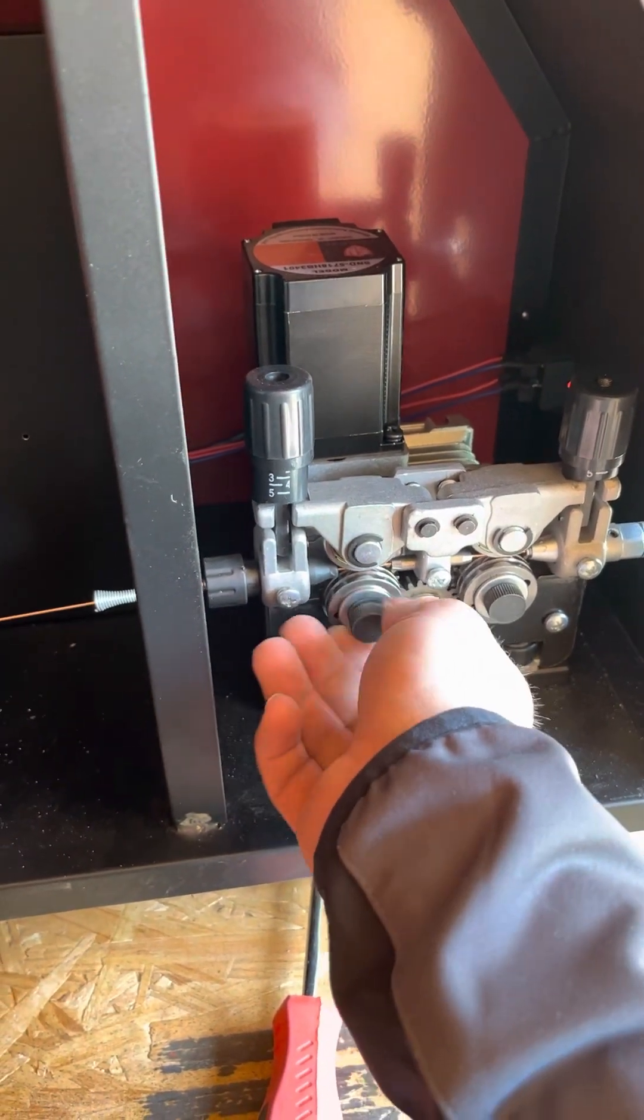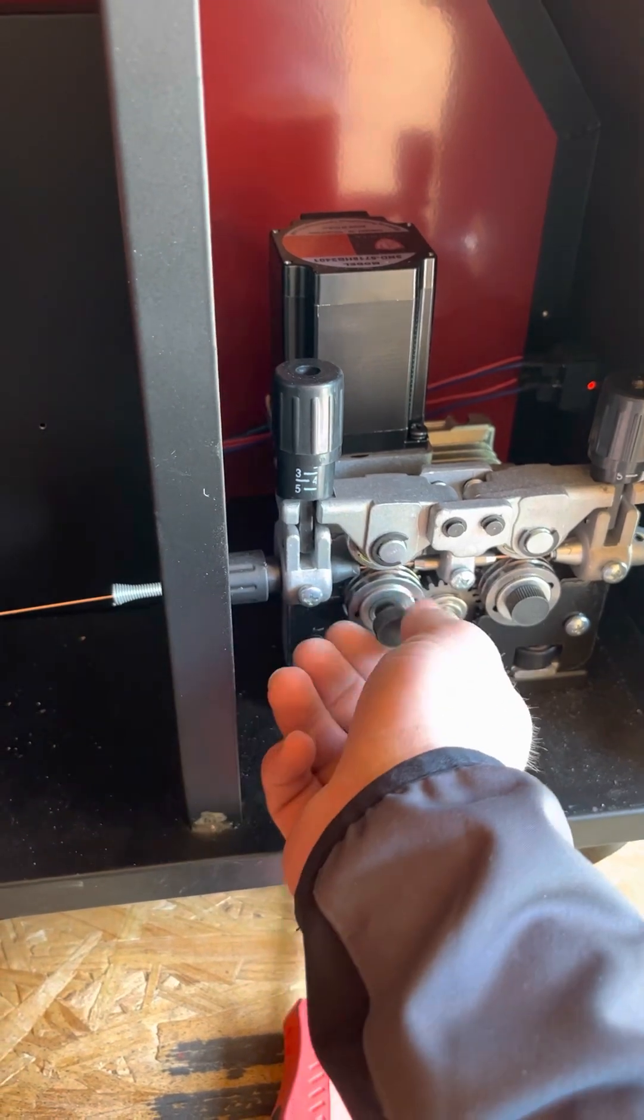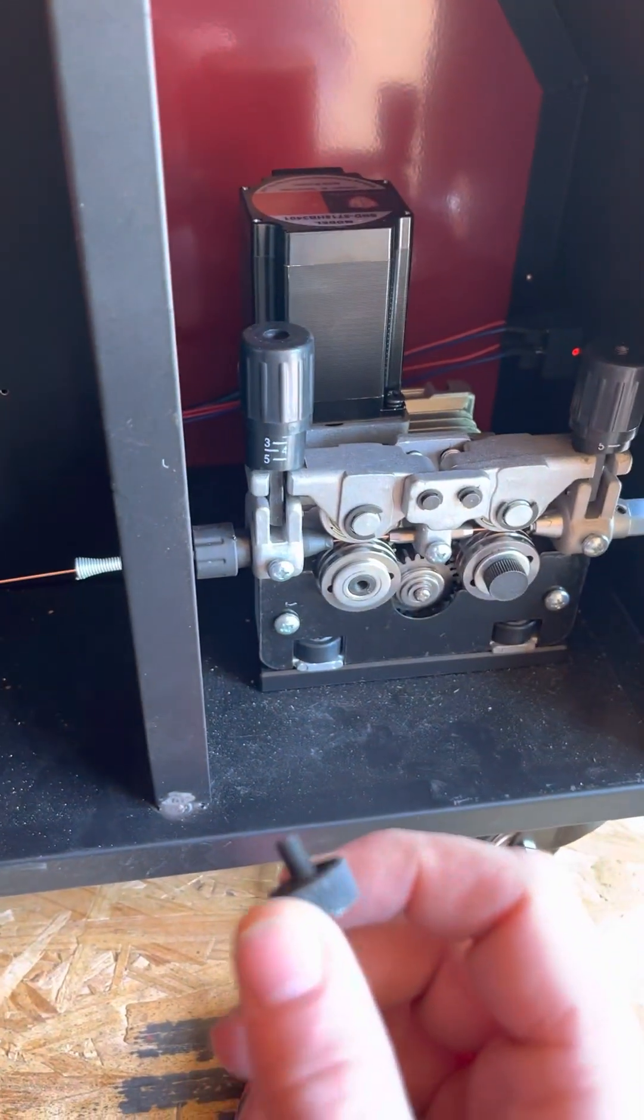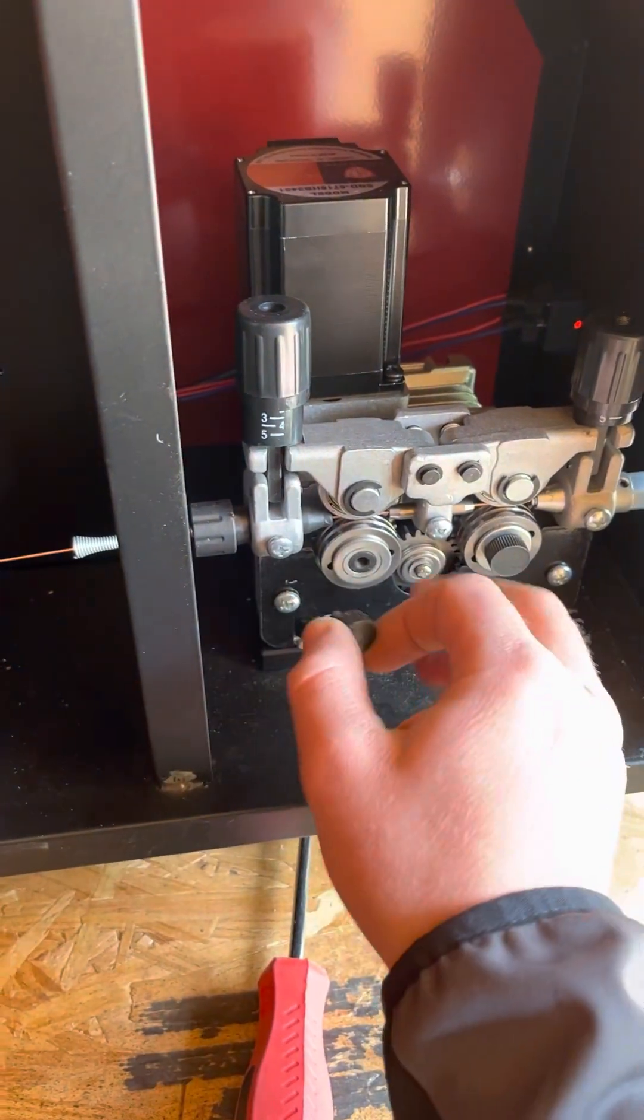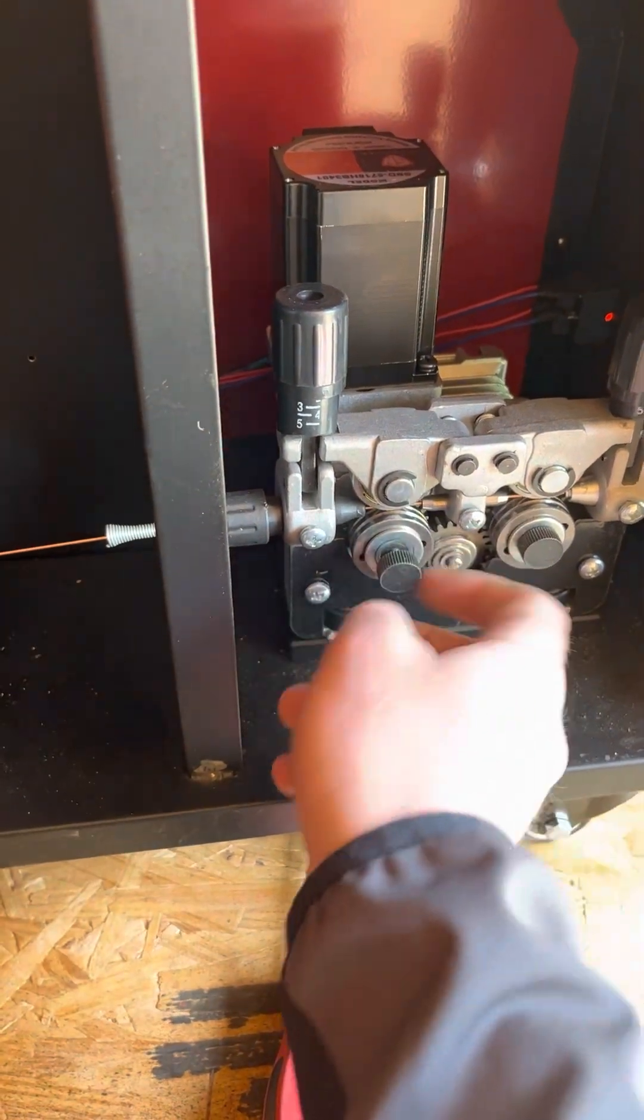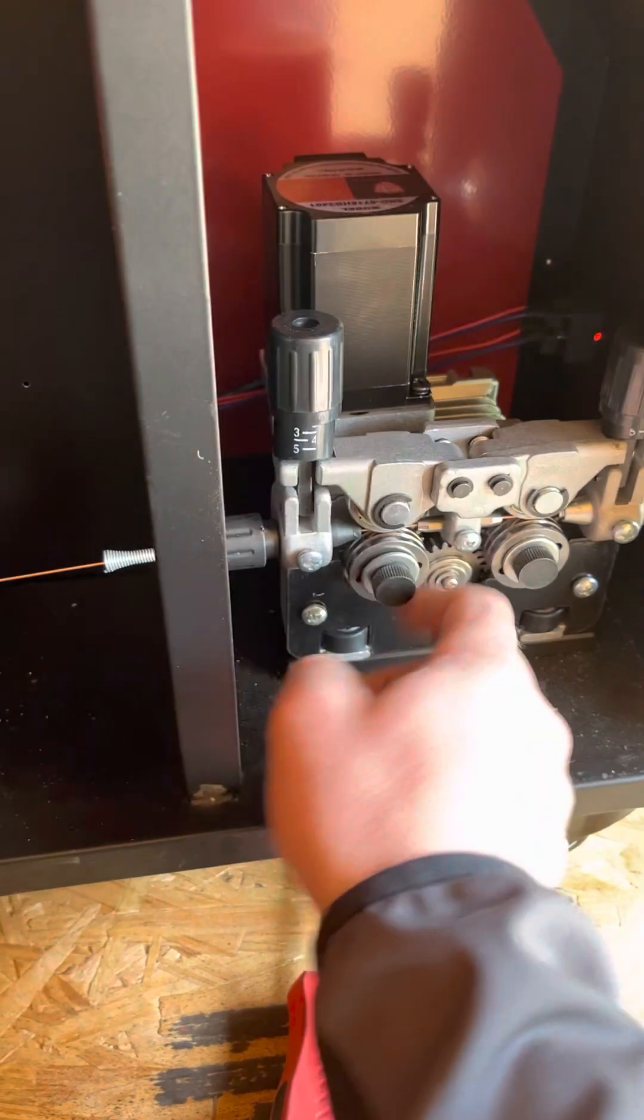Got a thumb screw here, pulls out, and then you've got this washer here, and then your guide roller, just pull it off. Swap your guide roller, put your washer on, tighten this.